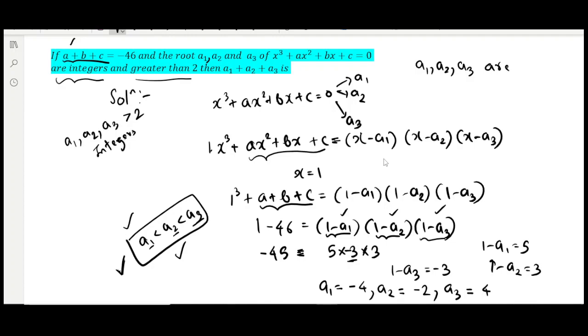This condition should have been given here, but if not, we're considering this case because we need to find a1 + a2 + a3. If we consider any ordering, the addition would remain the same—like 2 + 3 + 1 and 1 + 2 + 3 give the same sum.